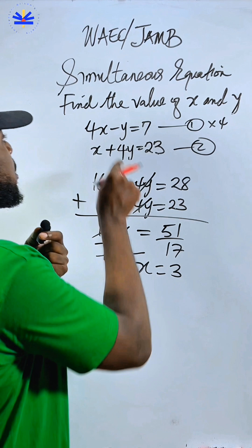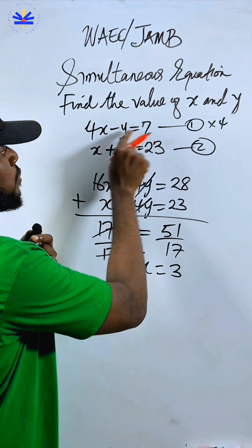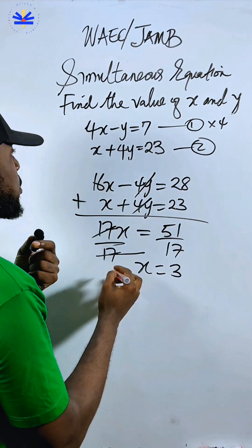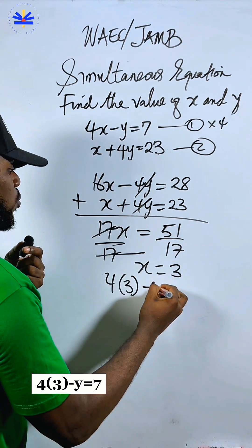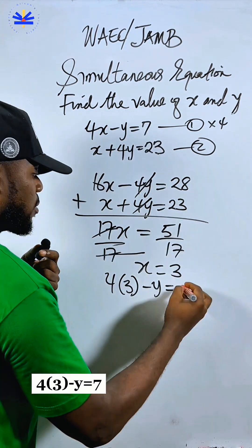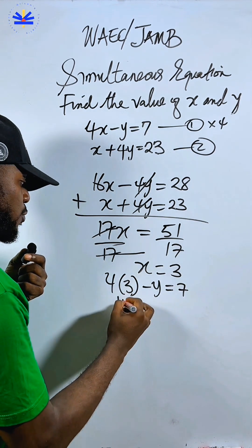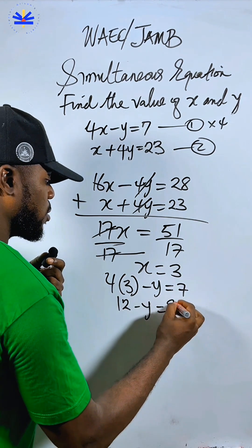Carry this particular answer and put inside equation one. Because it has small values. So that means I can get four times three. Because the value of x now is 3 now. Minus y equal to this particular one. 7.